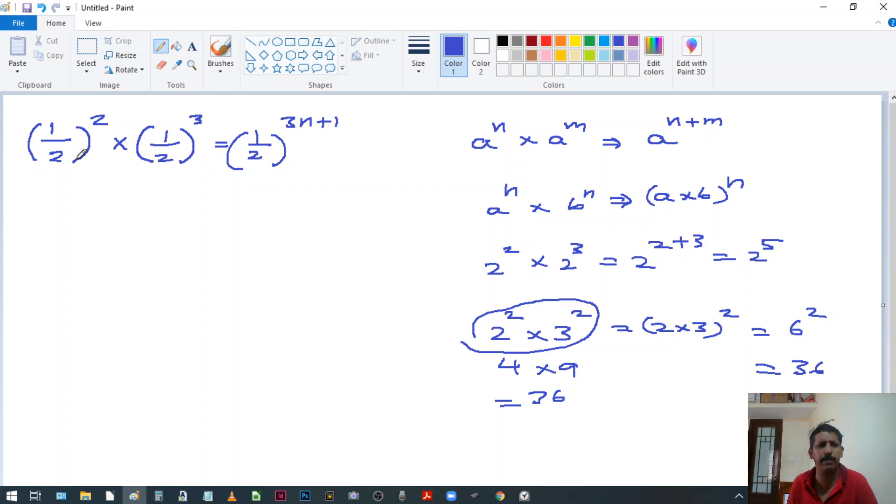In this situation, see the powers of the, see the base, the bases are same. So what do I do now? 1 divided by 2 raised to 2 plus 3, because both bases are same. So I am adding the powers. That is equal to 1 by 2 raised to 3n plus 1.